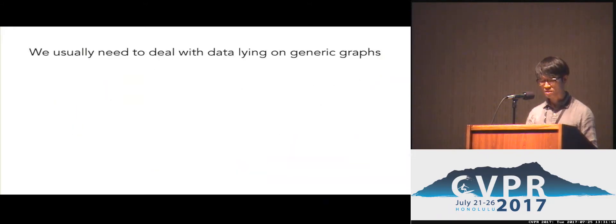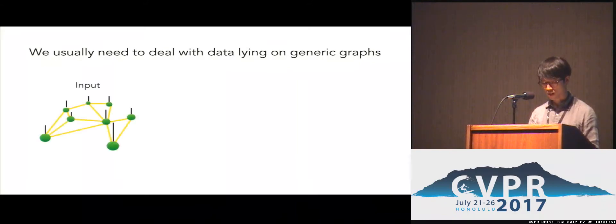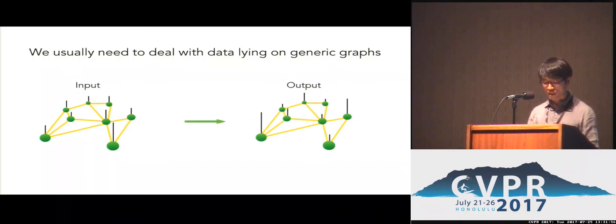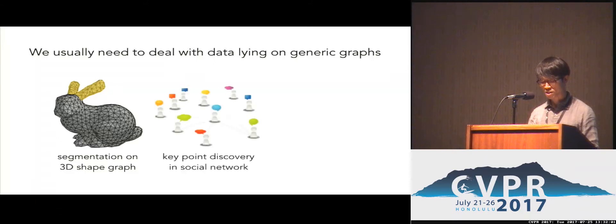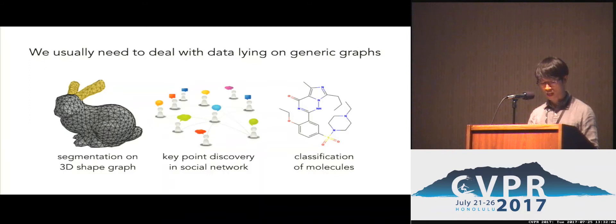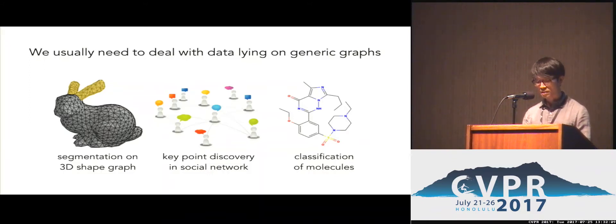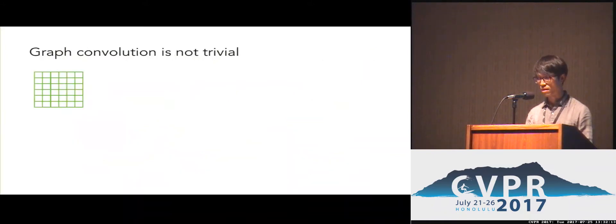Data lying on generic graphs widely exist in the real world. In many tasks, we are given a function lying on a graph, and we need to predict another function on a graph. This could be a segmentation function on a 3D shape graph, or a key point discovery task in social networks, or a classification task of molecules. Therefore, designing a deep neural network able to consume large graph data is an important problem.